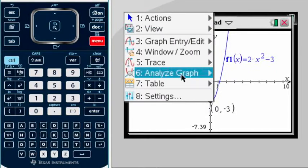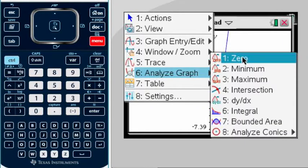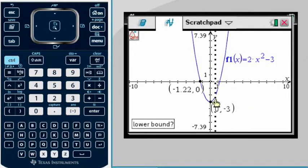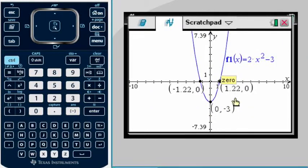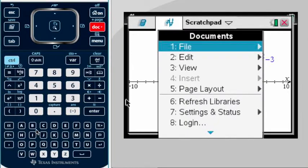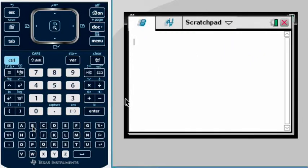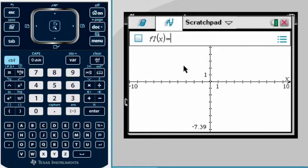So menu, Analyze Graph, zero, and there's the second one. Now remember, if you happen to put both, it won't work. You have to do one at a time. So let's try to do this again from the beginning.